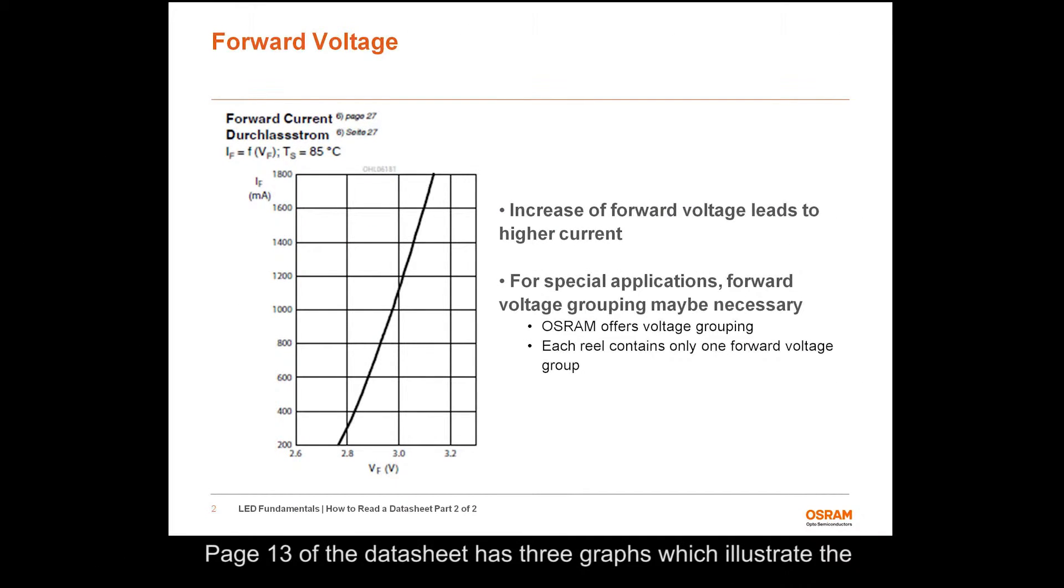Page 13 of the data sheet has three graphs which illustrate the behavior of the LED with respect to change in forward current. The first graph shows the change in forward voltage with increase in forward current at a constant solder point temperature of 85 degrees C. The scale on the x-axis represents the typical values of forward voltage. The current through the LED increases exponentially with increase in forward voltage.